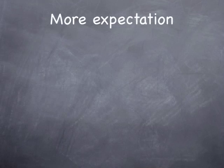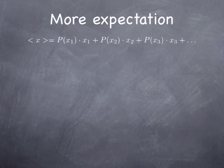Continuing that line of thought, if you want to know the expectation value of some random variable x — forget about dice, let's say we have a random variable x that can take on different values x1, x2, x3 — we can compute the expectation value as the probability of getting x1 times x1, plus the probability of getting x2 times x2, and so on. You can see how this expectation value formula comes out of general considerations.